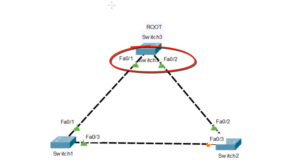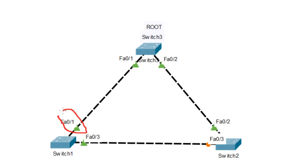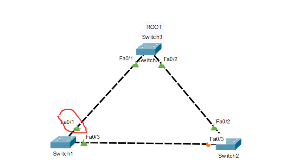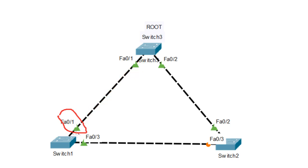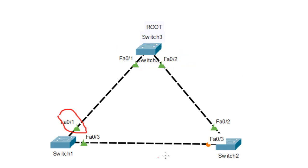If you configure Root Guard on FA0/1 on Switch 1, Switch 1 would receive a BPDU from Switch 3 that is lower, and it's going to disable that port — this link will be disabled. That's not what you want. That's the reason why you will never enable Root Guard on a switch that is not the root switch. Root Guard should only be enabled on ports that belong to the root switch.